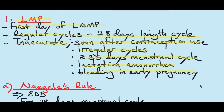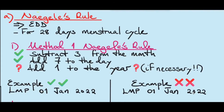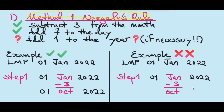You can use the LMP to calculate the EDD using Naegele's rule. Naegele's rule is used to calculate the estimated date of delivery and is most accurate if the woman has a 28-day menstrual cycle. There are two methods of Naegele's rule. The first method is the most commonly used: you subtract 3 from the month, add 7 to the day. The question is, should you add 1 to the year? It's not necessary to add 1 to the year all the time — you only add it if it's necessary.